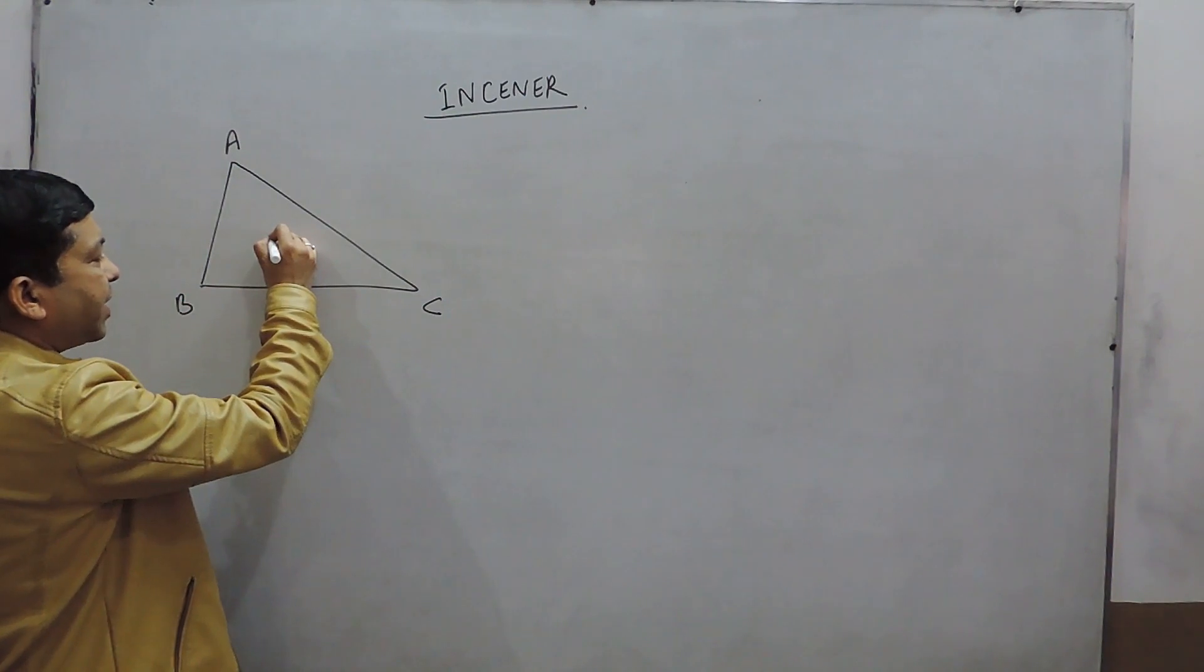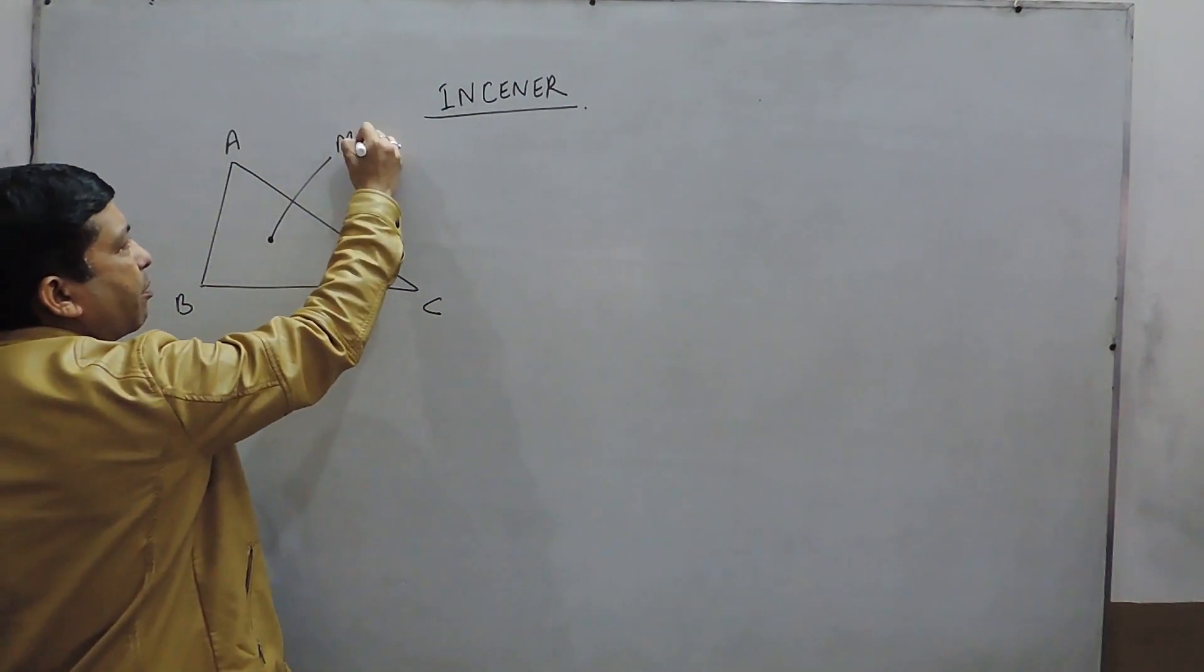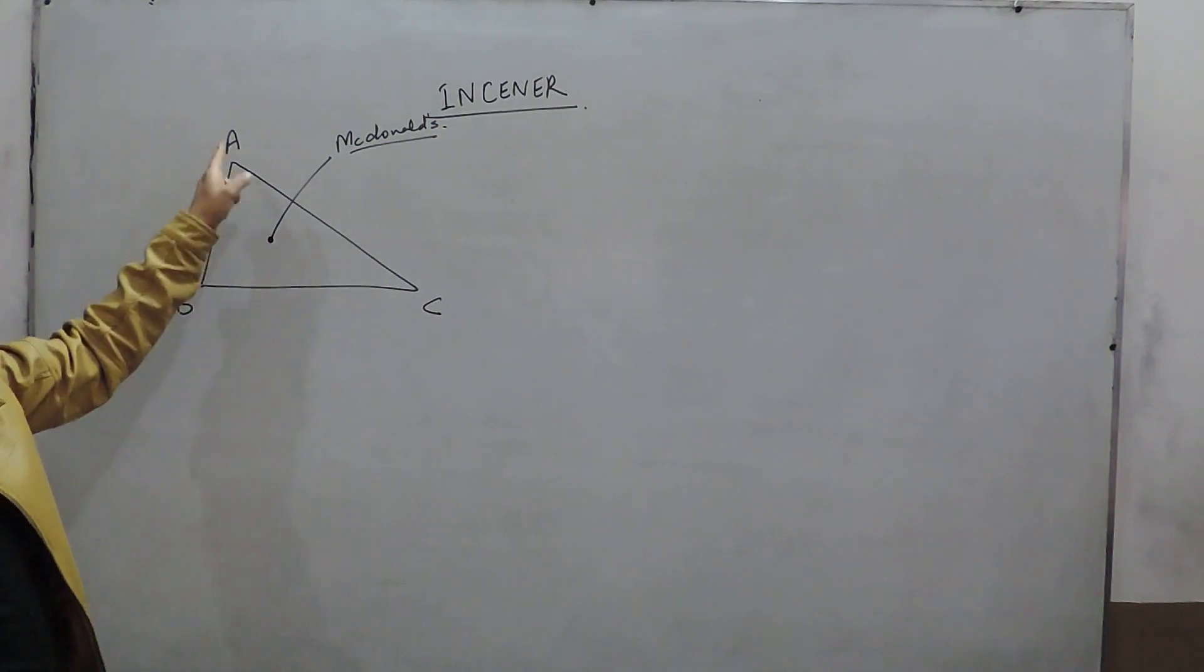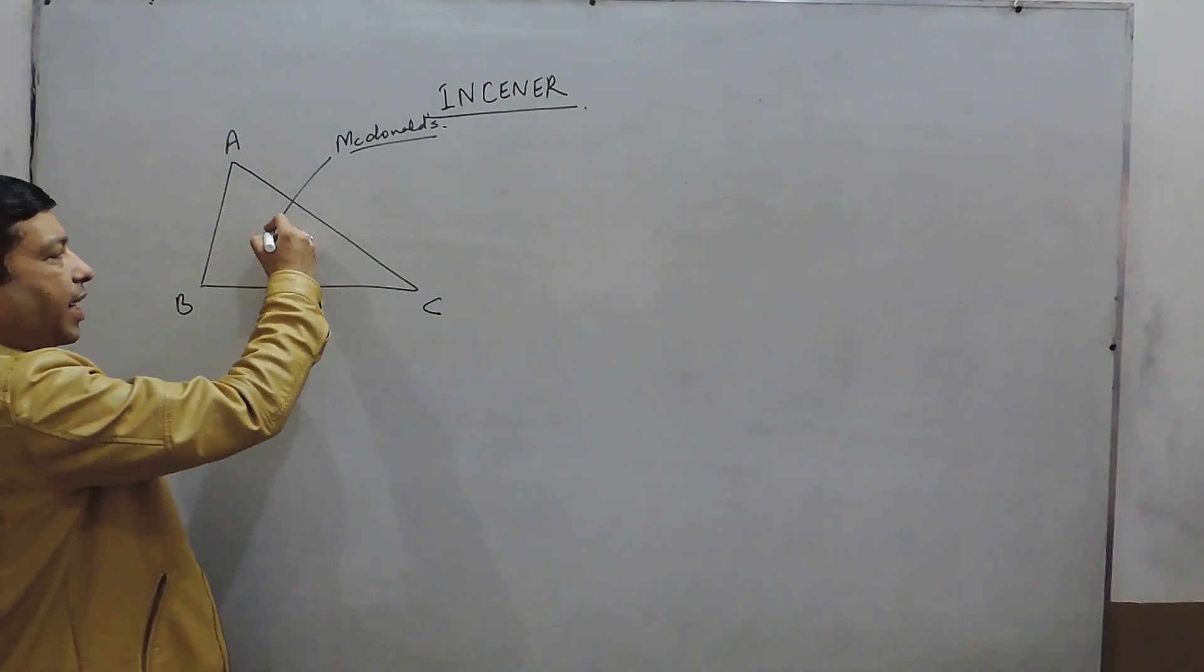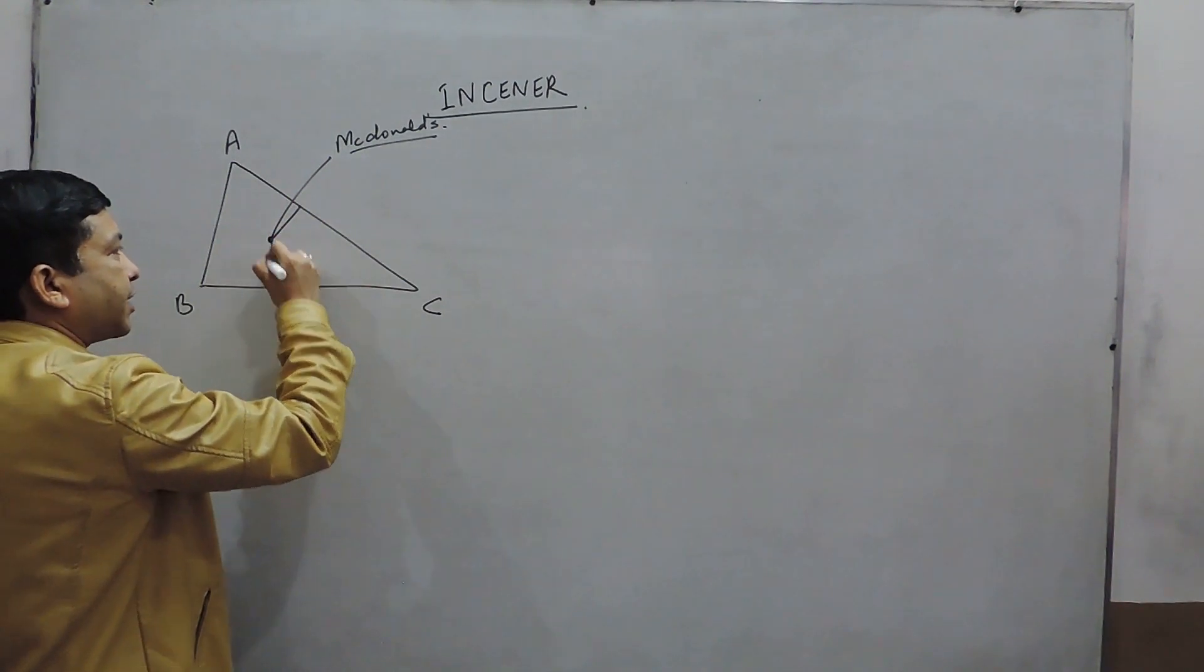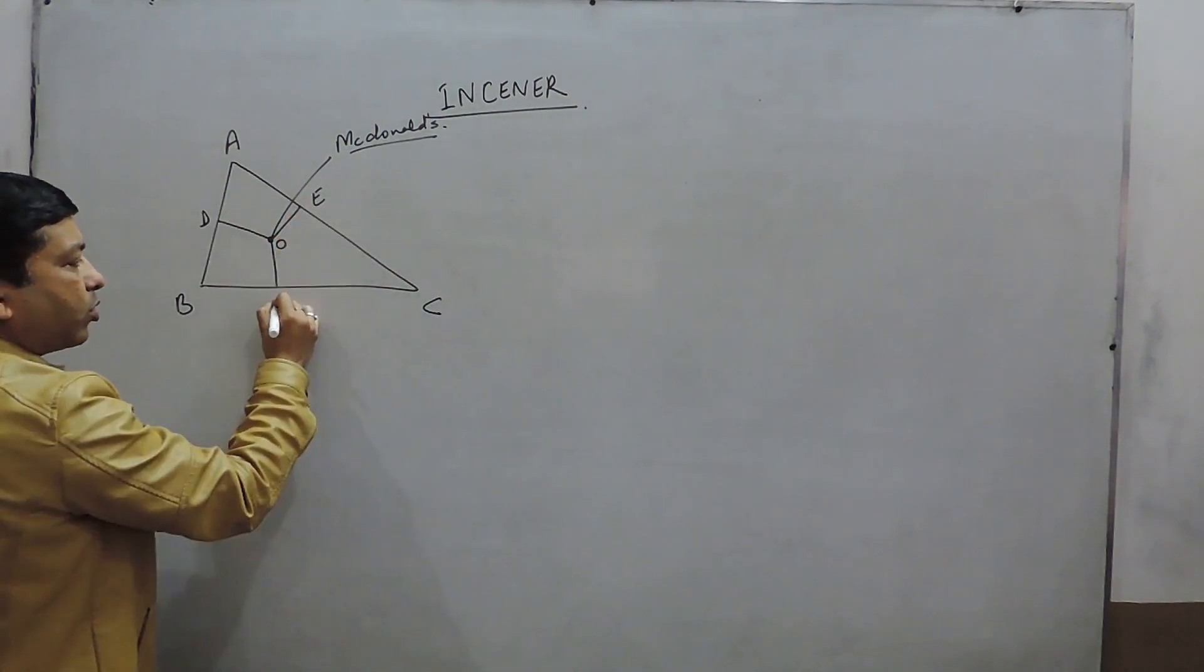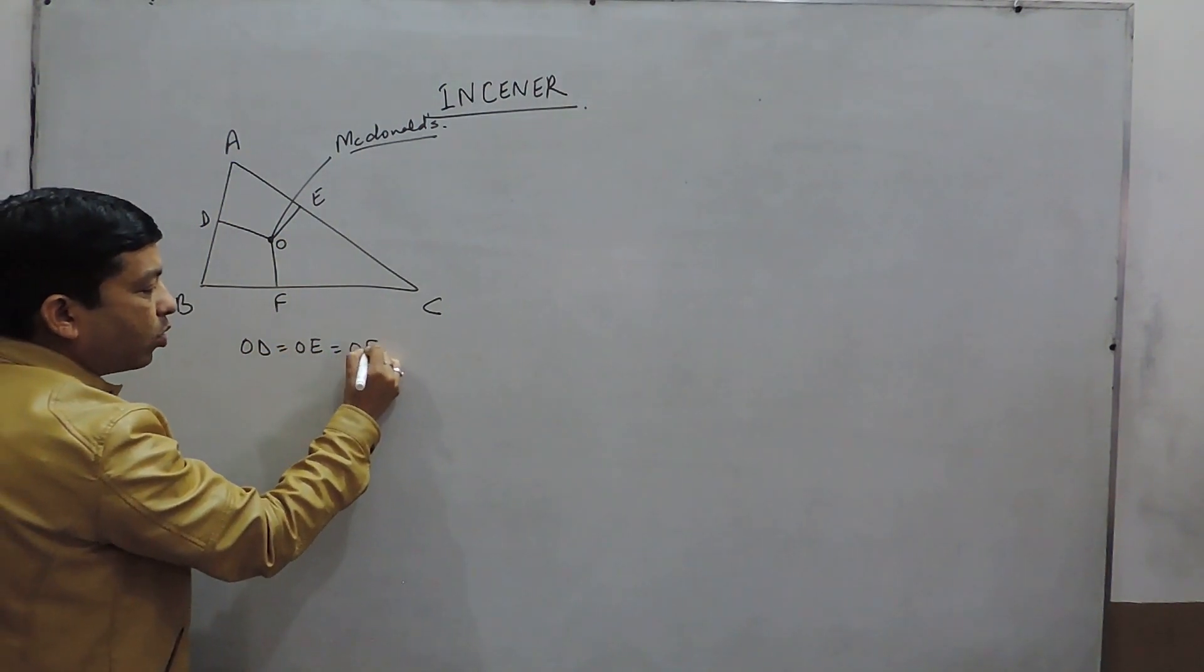Suppose there is a specific company, let's say Malboros, making burgers at this point, but they want to supply burgers to this side, this side, and this side. They definitely want a particular place having equal distances from all three sides. This is point O. So they want OD equal to OE, which is again equal to OF.